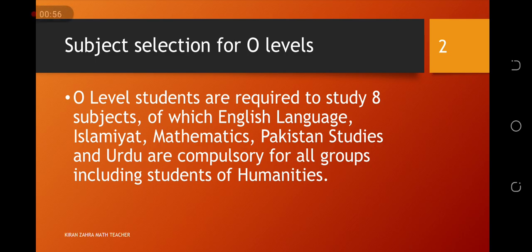So Humanities group, General Science group, whichever group we will select, un sab mein yeh tamam subjects like English language, Islamiyat, Mathematics, Pakistan studies, Urdu, yeh sab compulsory hain. Iske alawah hume tien subjects select karna patte hain, jho humare group ko decide karte hain.